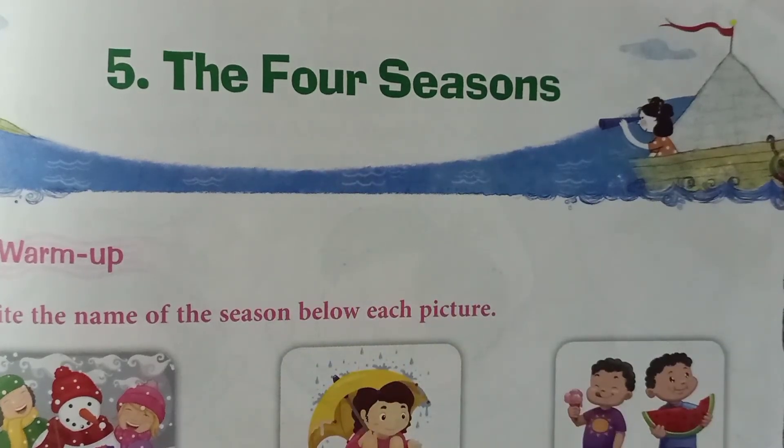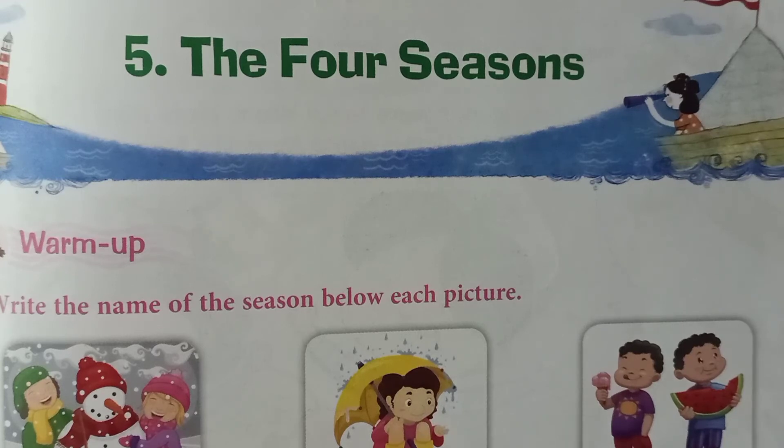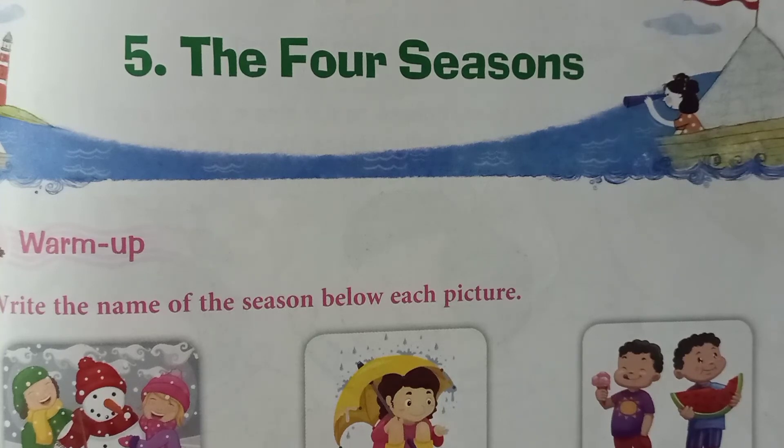Do you know what seasons are? Seasons means the weather changes throughout the year. At the beginning of the year we have winter in January and February. Then slowly the winter goes and spring comes in March and April. After spring, hot weather starts and it is summer in April, May, and June.